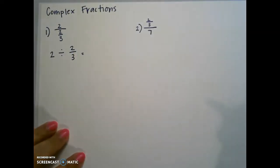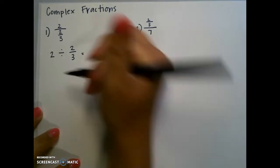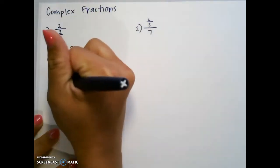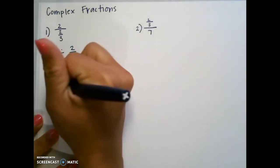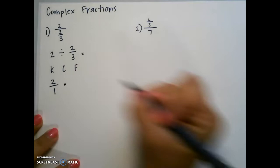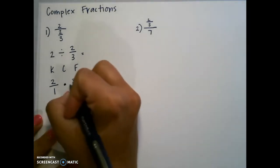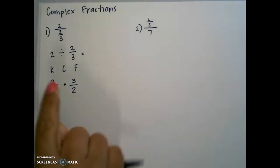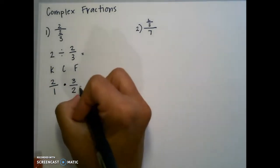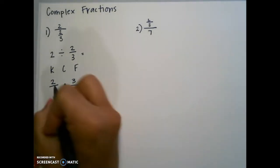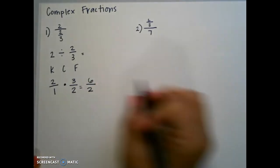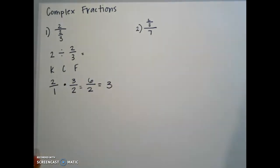If you do not have a calculator with the fraction function, we're going to do keep, change, flip. So we need to keep the first fraction — since it's a whole number, we'll put a 1 underneath it. Change the division to a multiplication and flip our second fraction. This means to multiply by the reciprocal. Then you multiply straight across: 2 times 3 is 6 and 1 times 2 is 2. This would simplify to give us an answer of 3.